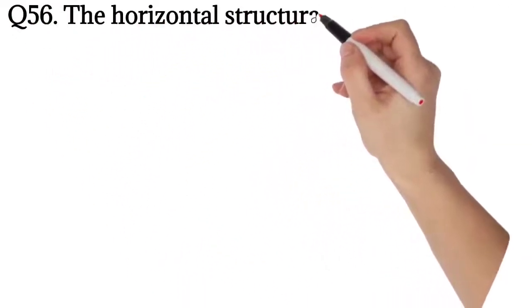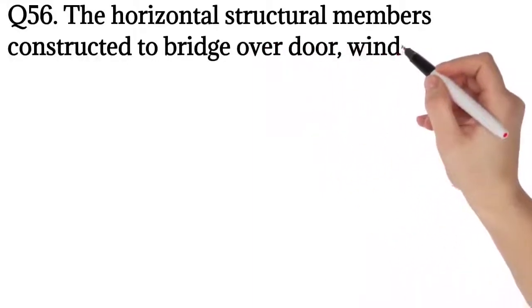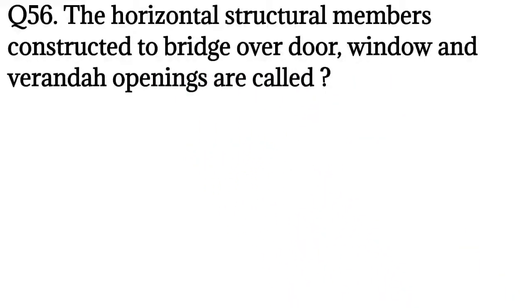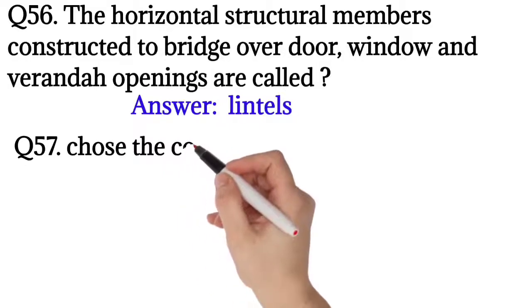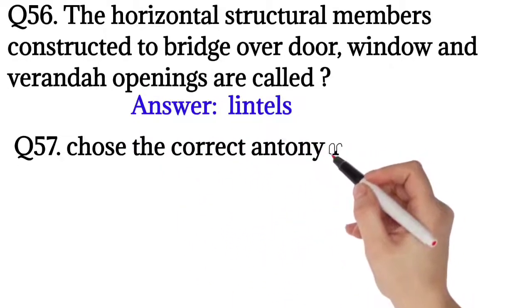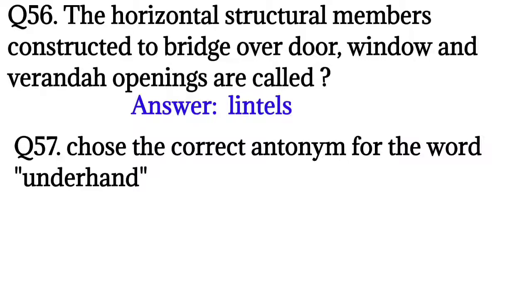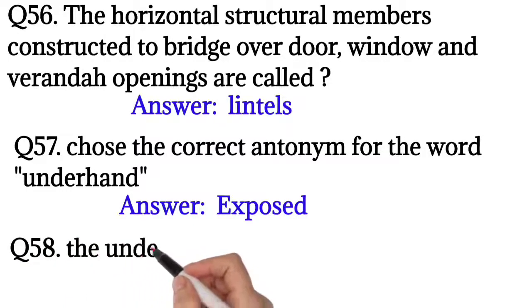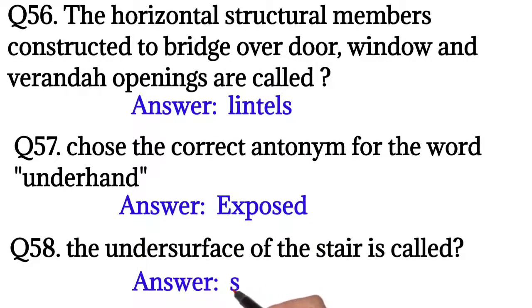Question number 56: The horizontal structural member constructed to bridge over doors, windows, and veranda openings are called? The answer is lintels. Question number 57: Choose the correct antonym for the word 'underhand.' The antonym of underhand is exposed. Question number 58: The under surface of the stair is called? The answer is soffit.